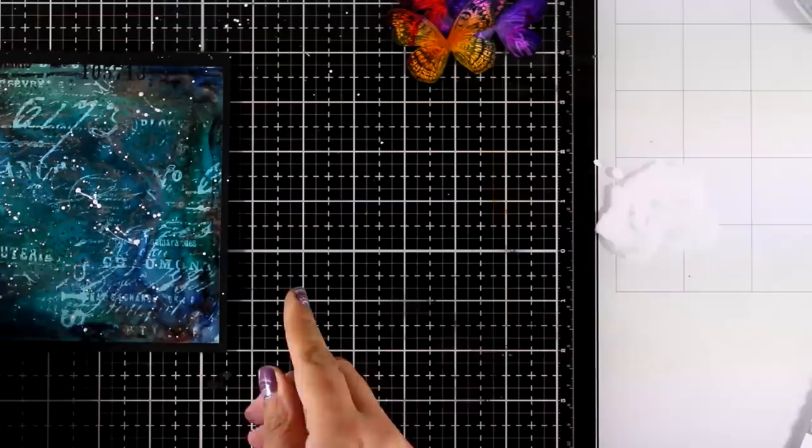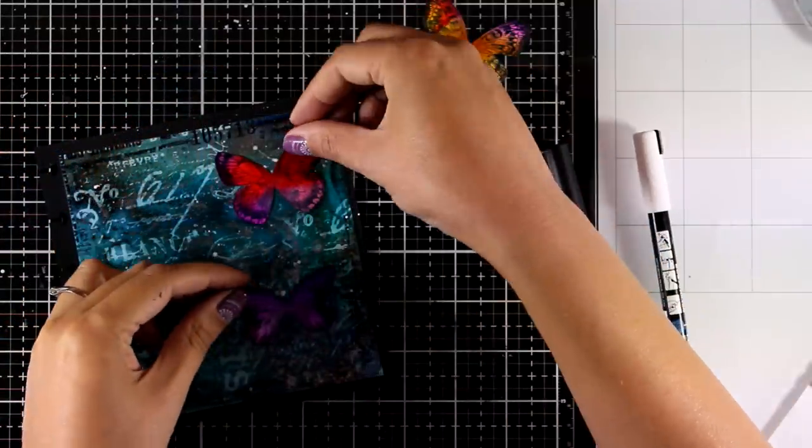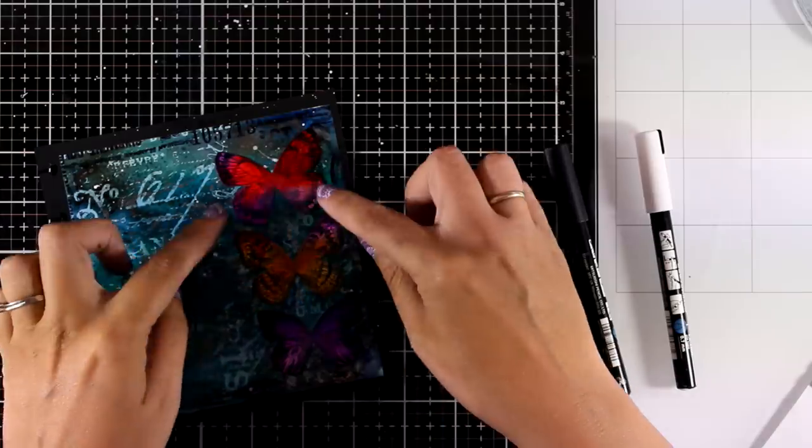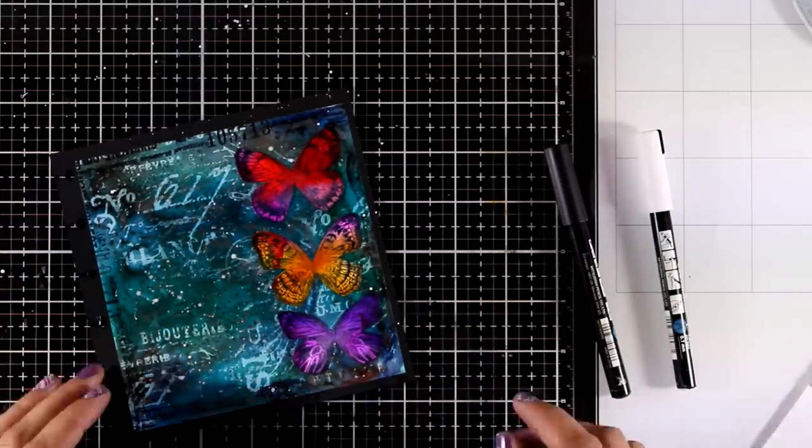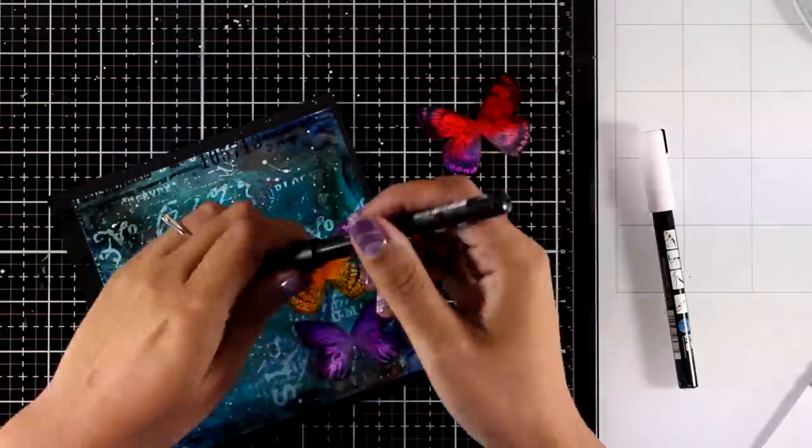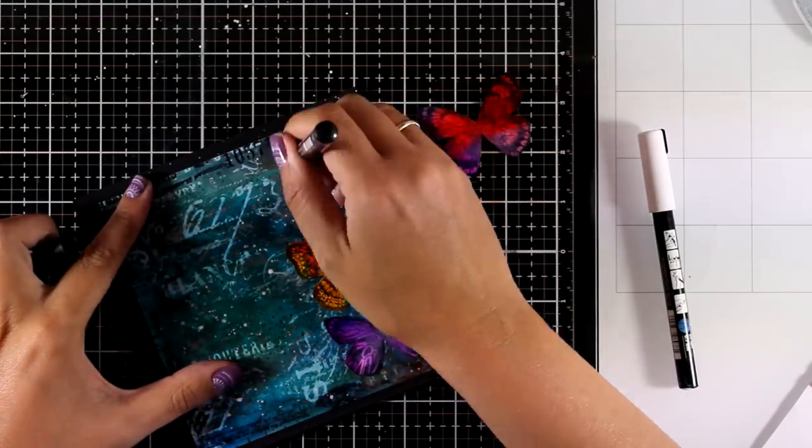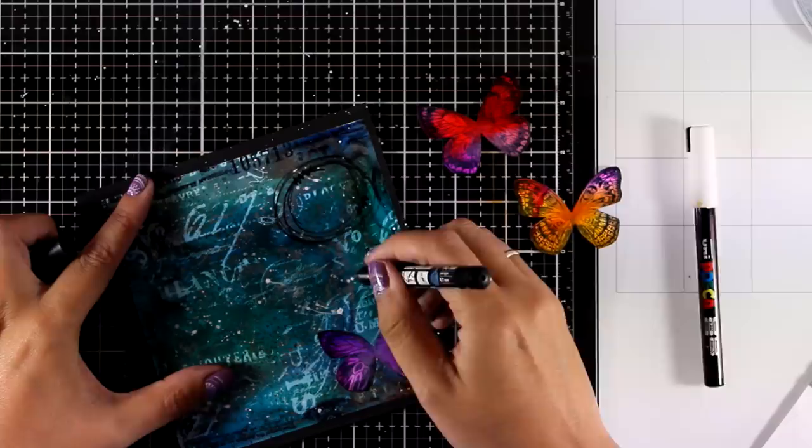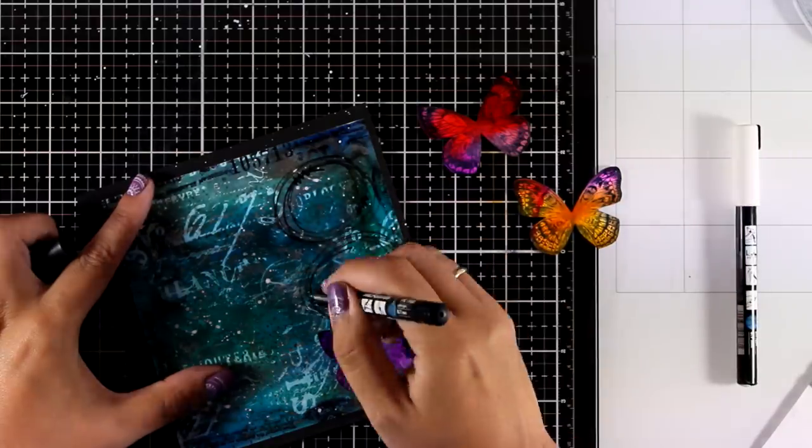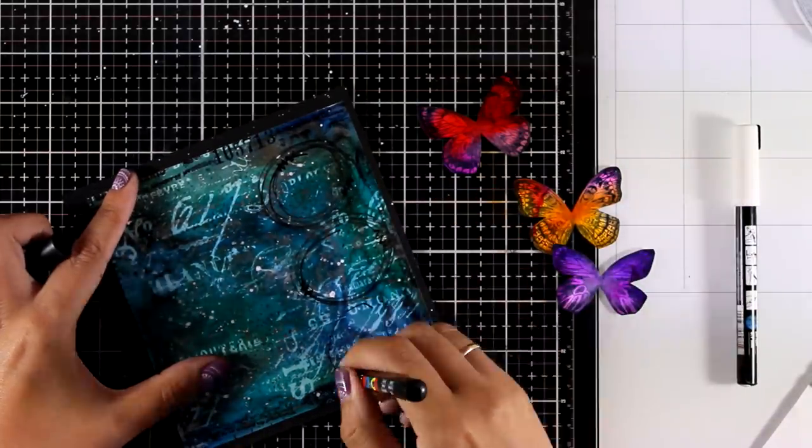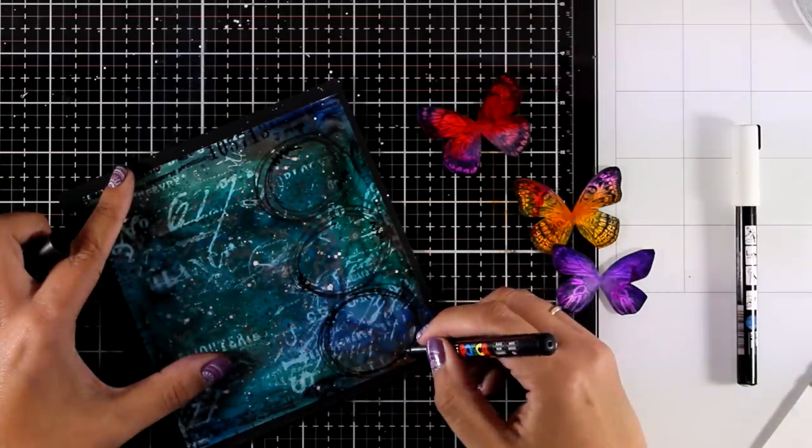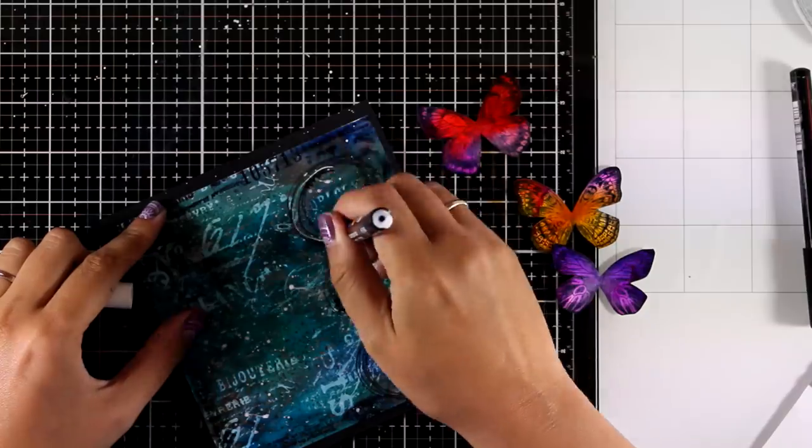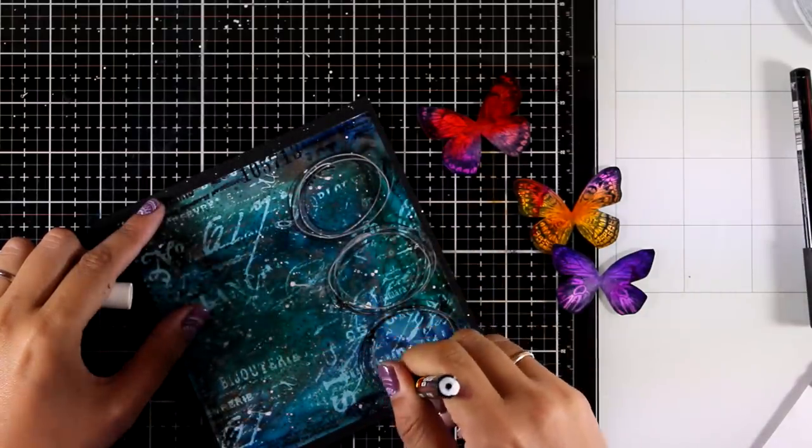Now I have brought out my Posca pens, a fine white one and a fine black one. I am placing the butterflies whereabout I want them to go and then I'm going to use my pens to do some scribbling. I'm not trying to create the perfect circles, I am also doing some doodling around them and I will use both white and black. This is where I will nest my little butterflies.